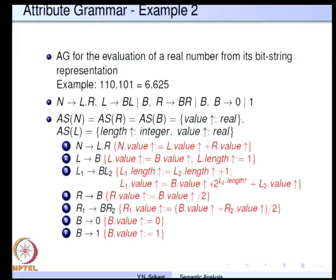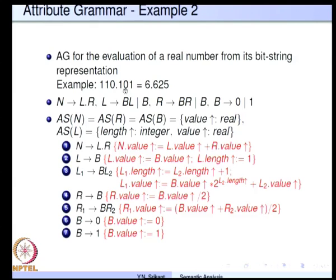Consider the attribute grammar for evaluating a real number from its bit string representation. For example, the bit string 1 1 1 0.101 has decimal value 6.625. The context-free grammar has N going to L dot R; L generates bits on the left side of the dot with productions L going to B L or B; R generates bits on the right side with R going to B R or B; and B is a bit, either 0 or 1.